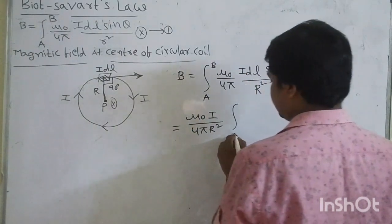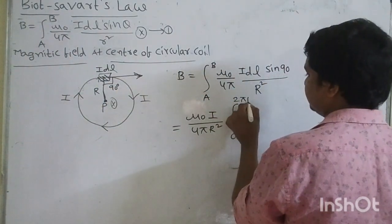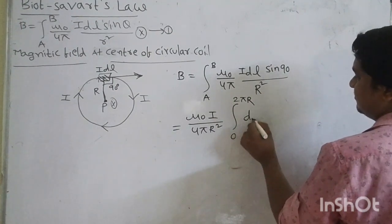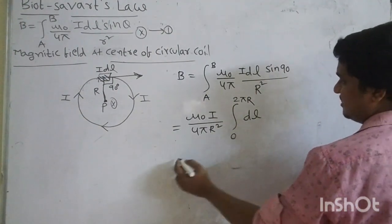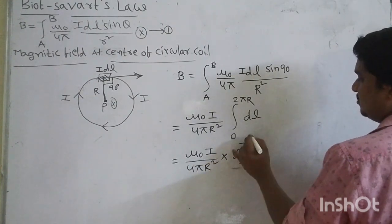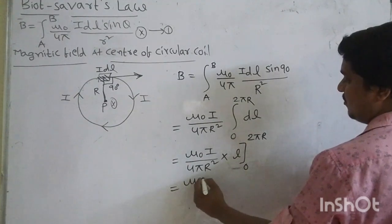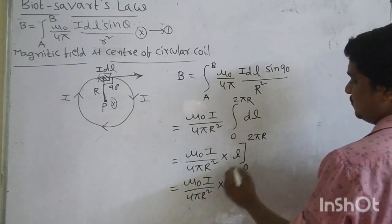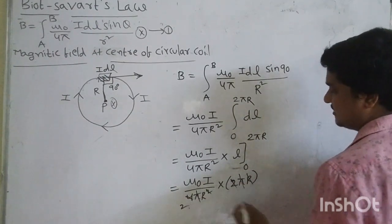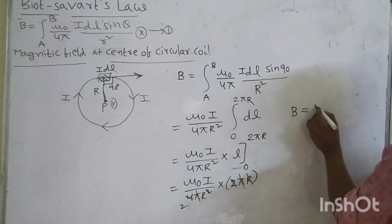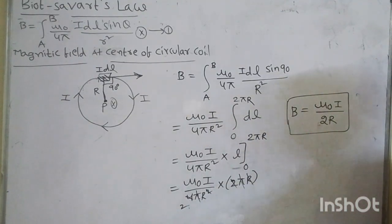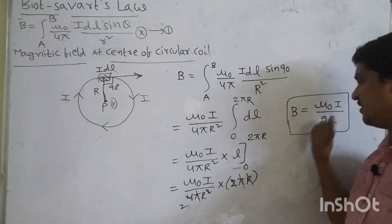Since μ₀I/4πr² is constant, integrating DL from 0 to 2πr (full circle circumference): B = μ₀I/4πr² · 2πr. The π terms cancel and r squared reduces, giving B = μ₀I/2r. This is the magnetic field induction formula at the center of a circular coil: B = μ₀I/2r.